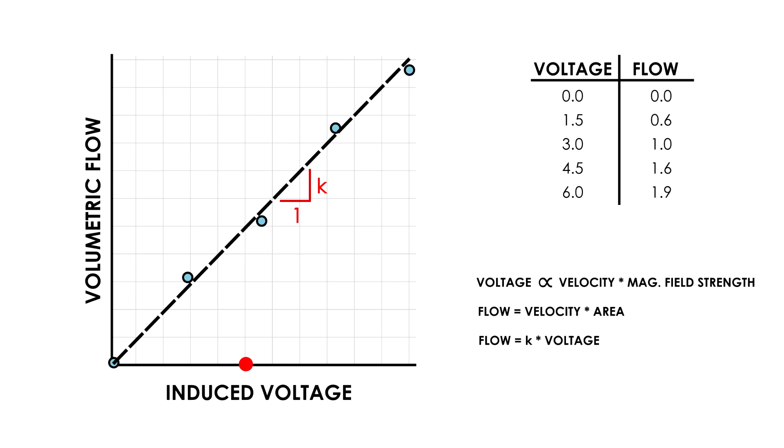And the math becomes dead simple. Step one, measure the induced voltage. Step two, multiply the voltage by the calibration constant. Voila, you just measured the flow. It really is that simple, assuming you get a good signal from your electrodes.